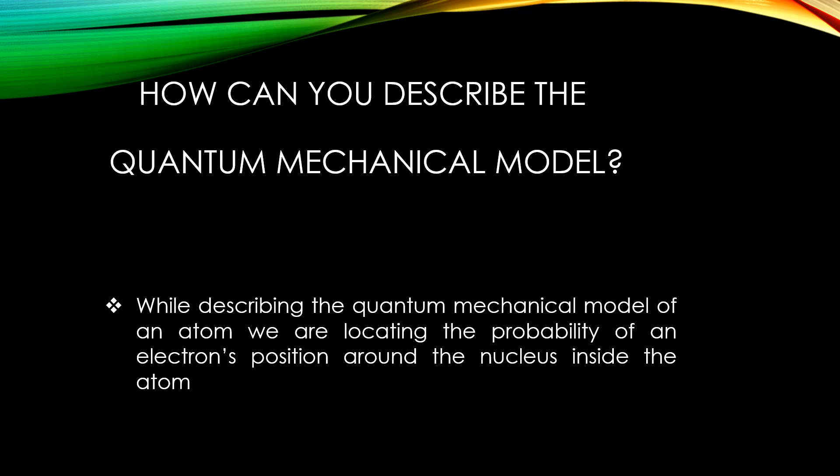We know that inside the atom there will be positively charged protons and neutral neutrons. Those will be located inside the nucleus, and around the nucleus the electrons rotate in their own paths. So how are we going to find out the revolving electron in a particular place? Using the quantum numbers, we are going to locate the position of the electron around the nucleus inside the atom.